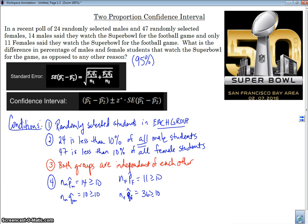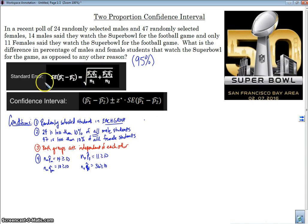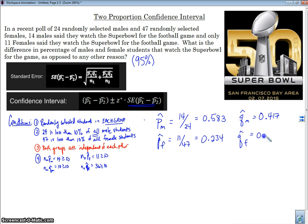So I am going to make this a bit smaller, so I have some room here to work, so we can still see the work here. So, the first thing I need to do here, notice I need to find my standard error, so I can put it in my margin of error formula. So, we are going to plug in our formulas for our, well, first of all, I need to know what P hat and Q hat are. So I am going to first find PM hat, and PM hat is my proportion of males that watch the Super Bowl for the football game. So that is 14 out of 24, which is 0.583, which makes QM hat 0.417. And PF hat, which is the percentage of females that watch the Super Bowl for the football game, is 0.234, and which makes QF hat 0.766.